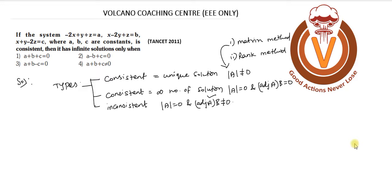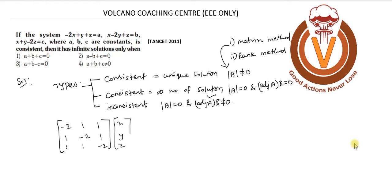To find the determinant of A, we rewrite the equations in matrix form: the coefficient matrix is [−2, 1, 1; 1, −2, 1; 1, 1, −2], multiplied by the column vector [x, y, z], which equals [a, b, c]. This gives us the system Ax = B.